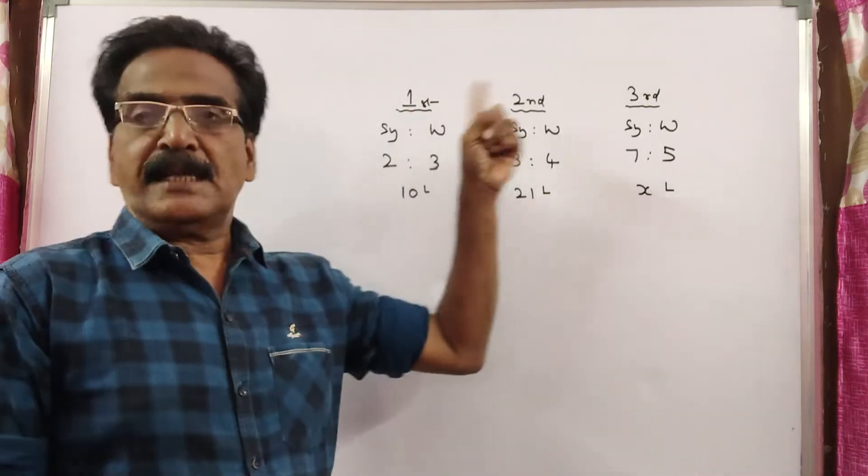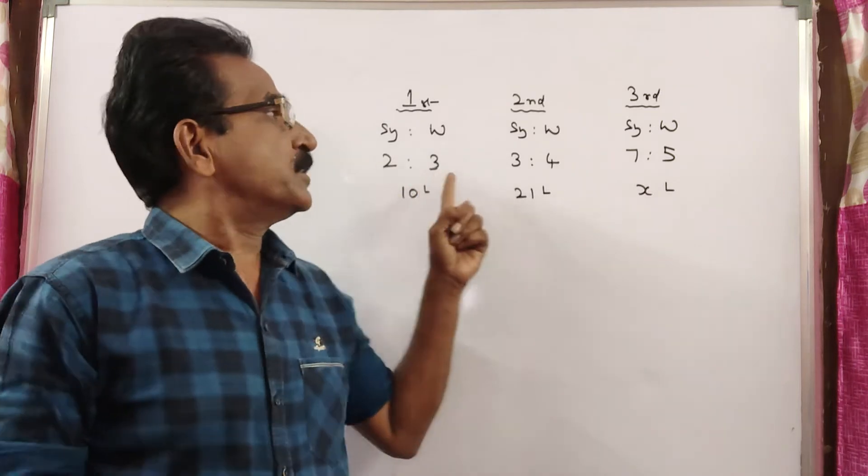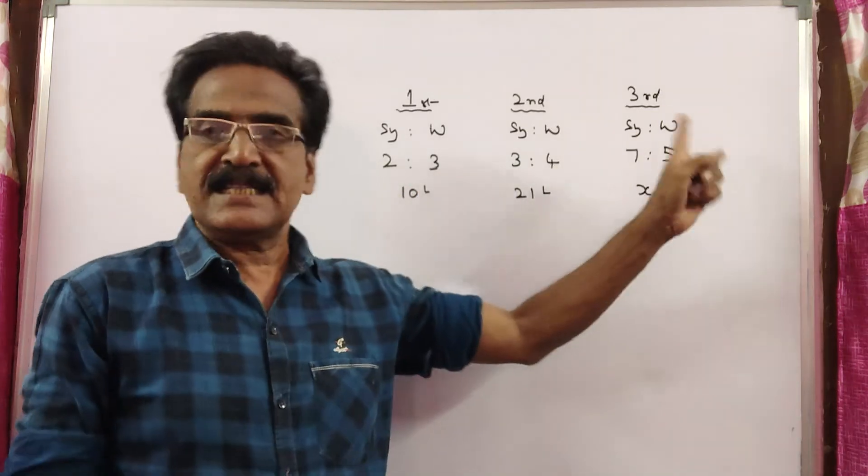In three bottles, syrup and water are in the ratio 2 to 3, 3 to 4, and 7 to 5.